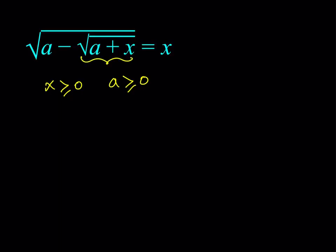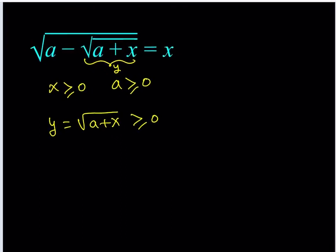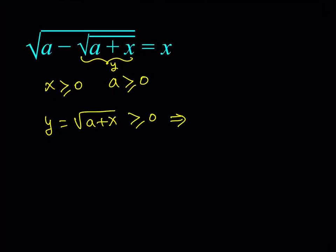Let's go ahead and call this part y. Notice that y is equal to the square root of a plus x, and y is also greater than or equal to 0. So with all these conditions, we're going to get started. And by replacing square root of a plus x with y, I also obtained another identity: the square root of a minus y is equal to x.